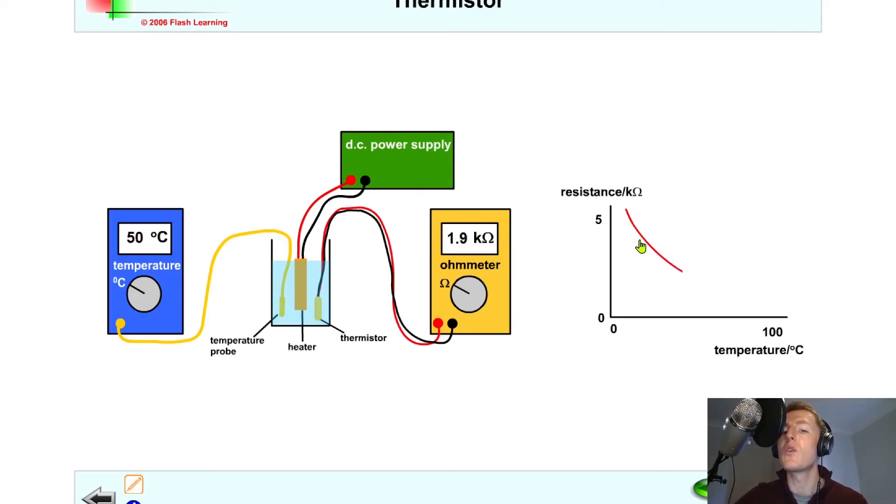So this is shown on the graph here. As we've plotted resistance against temperature, you'll see we've got this inverse relationship where as temperature goes up, the resistance goes down. So we should have a curve down the way like this.